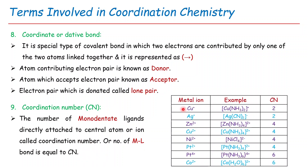For example: Cu⁺ has coordination number 2, while Cu²⁺ has coordination number 4. Ag⁺ in [Ag(CN)₂]⁻ has coordination number 2. Nickel has coordination number 4 in its complex, platinum has coordination number 6, and cobalt has coordination number 6. This covers all the basic terms involved in coordination chemistry.